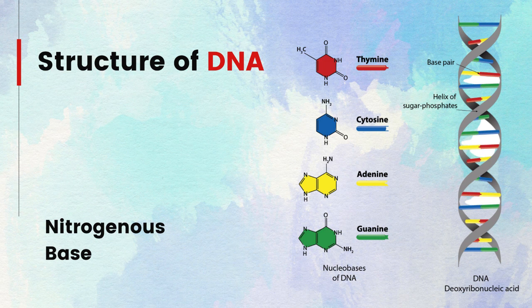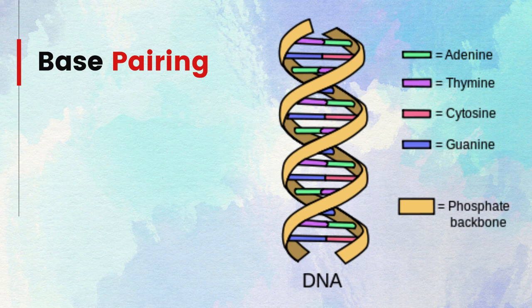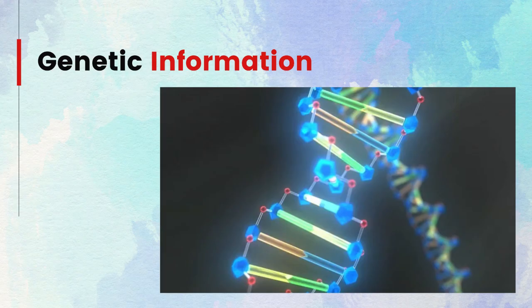There are four nitrogenous bases in DNA: adenine (A), thymine (T), guanine (G), and cytosine (C). These bases pair with each other — A with T, and G with C. DNA follows a specific base pairing rule where adenine pairs with thymine and guanine pairs with cytosine. This complementary base pairing is crucial for the replication and transcription of DNA. DNA stores genetic information in the sequence of its nitrogenous bases, like a code that contains instructions for building and maintaining an organism. Genes are specific segments of DNA that carry information for the synthesis of proteins and other molecules.